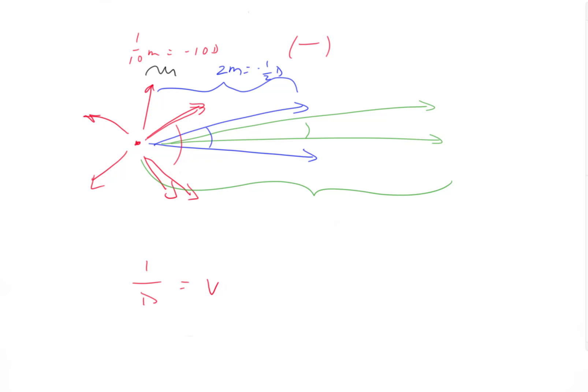And if, let's say, the green one is infinity, one over infinity approaches zero. So the vergence equals zero diopters, and the light rays are essentially parallel.